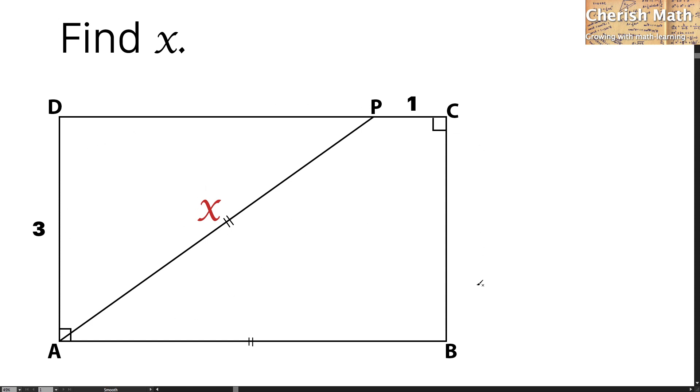Given here is a rectangle, where the length of AB is the same as the length of AP which is the value X. The height here is given as 3 units and the length PC is 1.